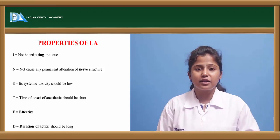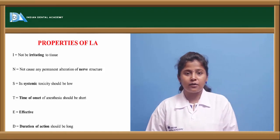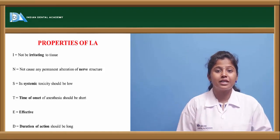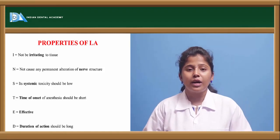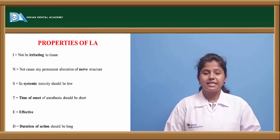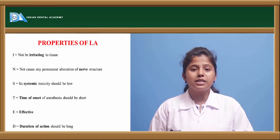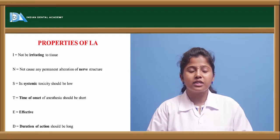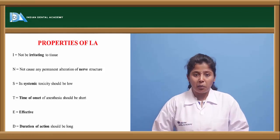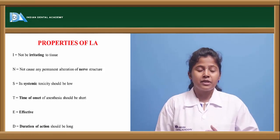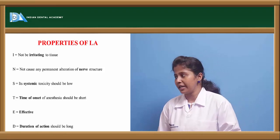'S' means systemic toxicity should be low — it should not cause toxicity, rashes, or hypersensitivity reactions where it is injected or applied. 'T' means the time of onset of action should be fast — once we administer the local anesthetic, it should show its effect quickly; delayed onset should not be a characteristic property. 'E' means it should be effective once applied — if it is not effective, there is no use giving it.